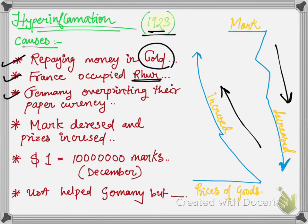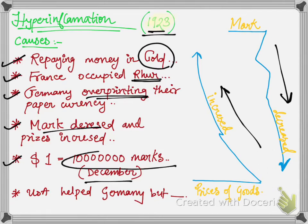Germany started overprinting paper currency, because of which the Mark — Germany's currency — decreased drastically. In April, 1 euro was equal to 24,000 Marks. In July, the same value changed to 3,53,000 Marks. In August, it became 46,21,000 Marks. And in December, 1 euro was equal to 1 crore Marks.